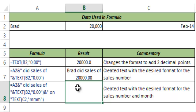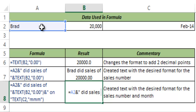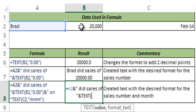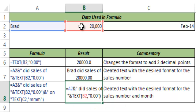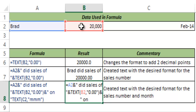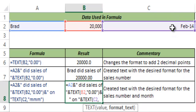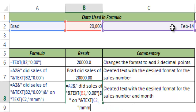Again let me show you how to use text formatting to create longer sentences. So I use 'Brad' ampersand space 'did sales of' space ampersand, then the TEXT function for B2 in format 0.00, close it, then ampersand 'and this sales was done on', then another TEXT function for the date in C2. I specify the format as MMM which gives only the month, not the full date, and I hit Enter.